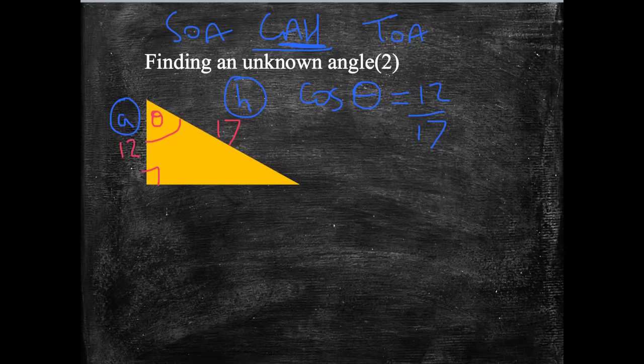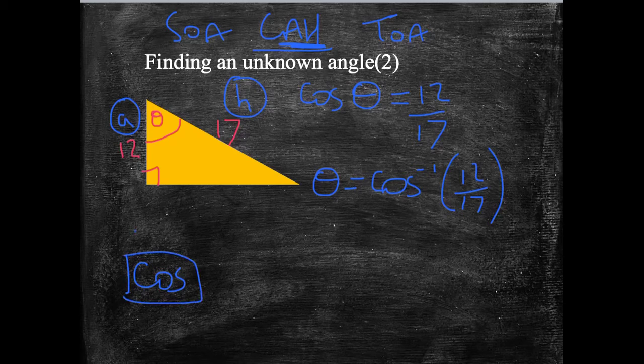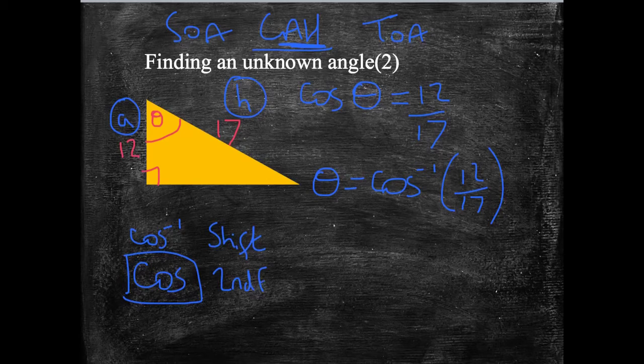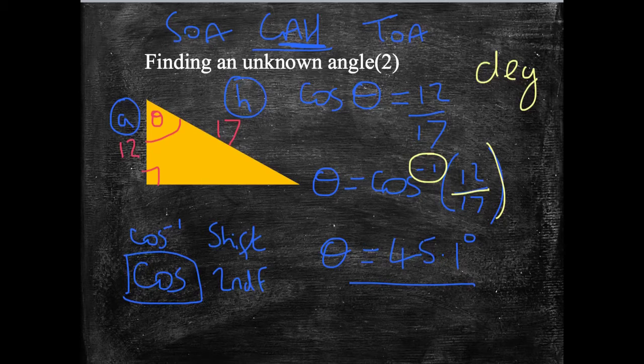We need to do theta equals the inverse of cos. We're going to do cos to the minus 1 of 12 over 17. Look on your calculator for your cos button. Cos to the minus 1 will be above that, so you'll probably need to press your shift or second function, depending on your calculator. Theta will then come out of your calculator, and you'll get an answer of 45.1 degrees. Just check that that is right. If you're not getting that, check that you've closed your brackets, that you've done a divide and not a multiply, that you've done cos to the minus 1, and that you're in degrees. I've also rounded my answer. You'll get more decimal places, I've just rounded it for ease.